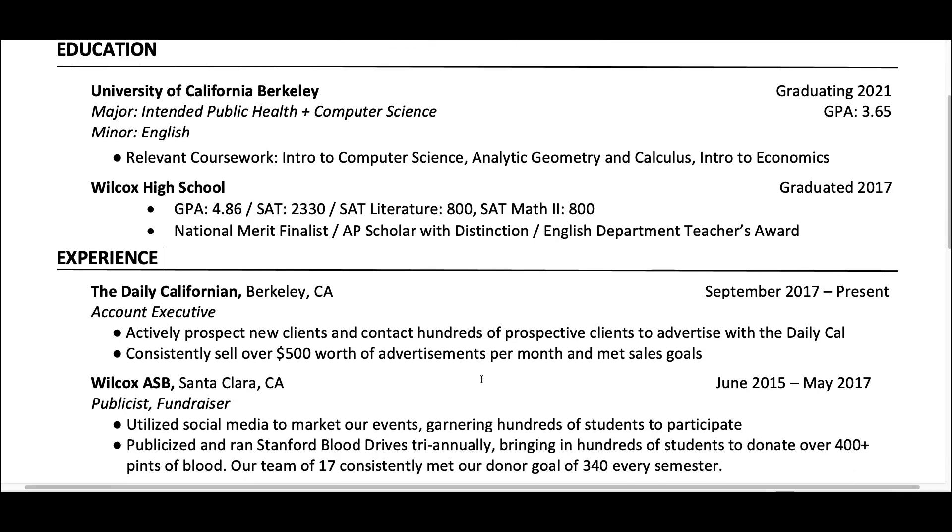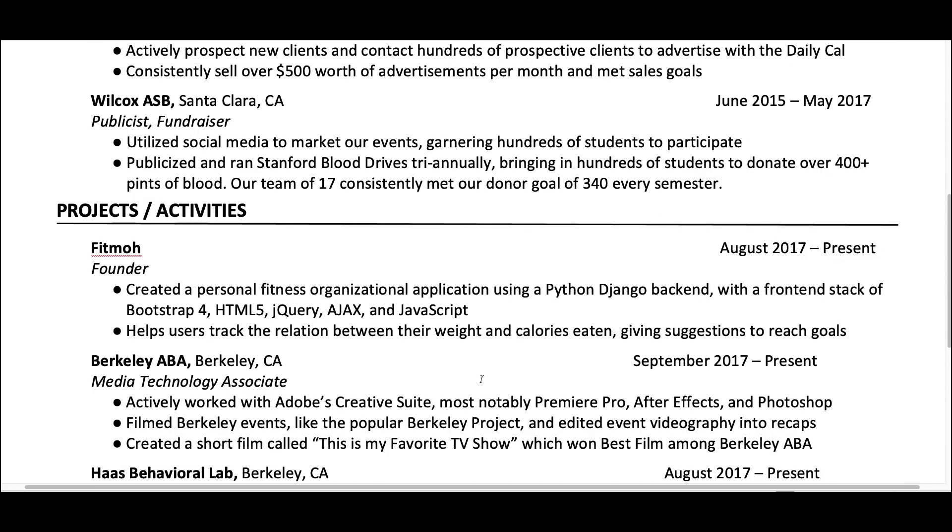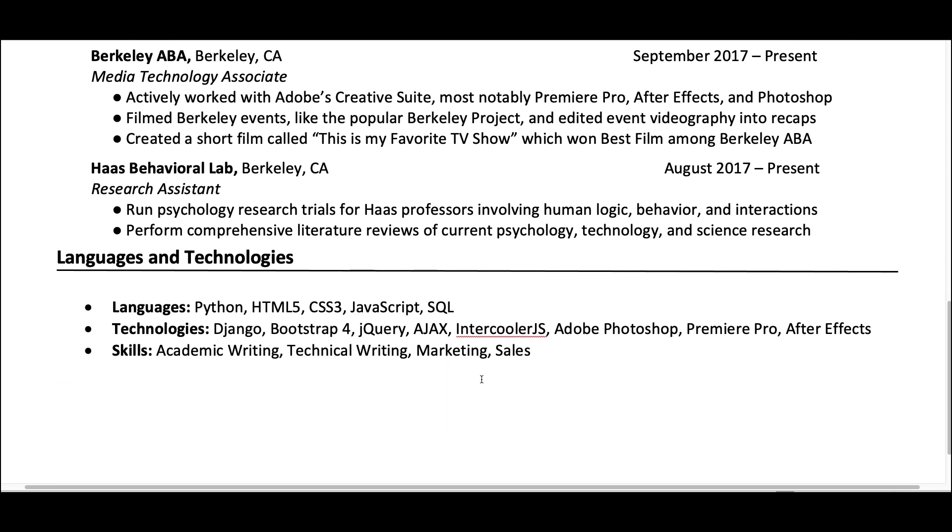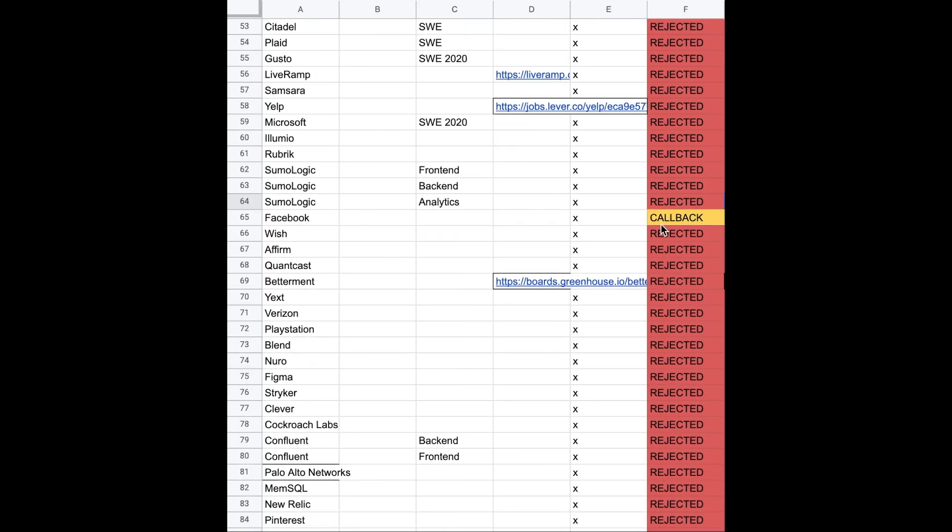Recruiting season starts in September, and I had only taken one CS class at that point. I didn't really know what a data structure was, I didn't know what an algorithm was, and I didn't even know what a coding interview looked like. My resume was basically a bunch of unrelated experience and one personal project. Throughout that entire semester I applied to probably 190 companies, and over the total course of the year I applied to 300 companies. I had an Excel sheet tracking them all — red was a rejection, yellow was a callback, green was an offer — and out of 300 I had only two callbacks, less than a one percent callback rate.